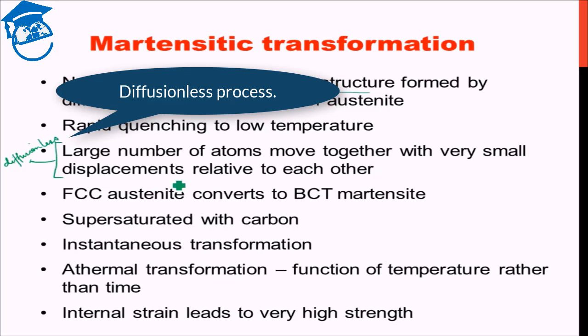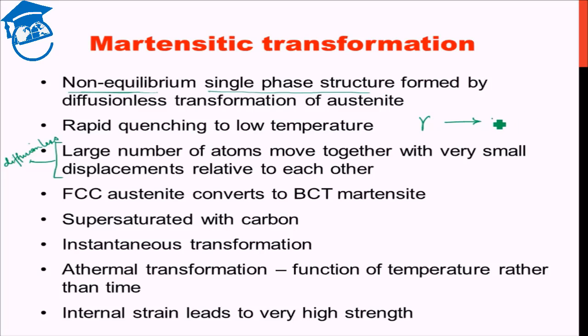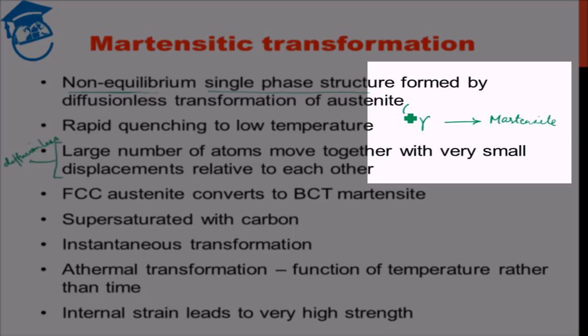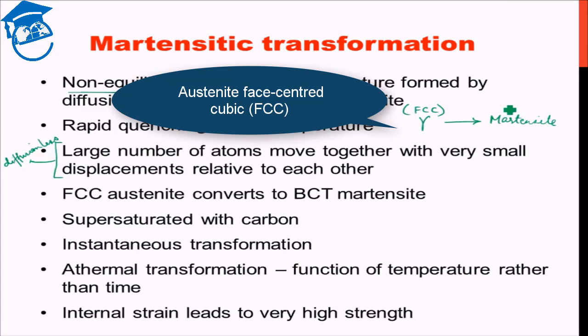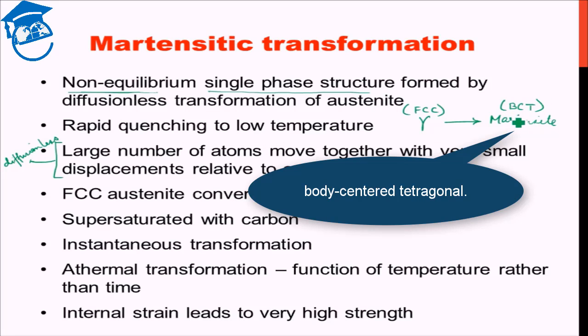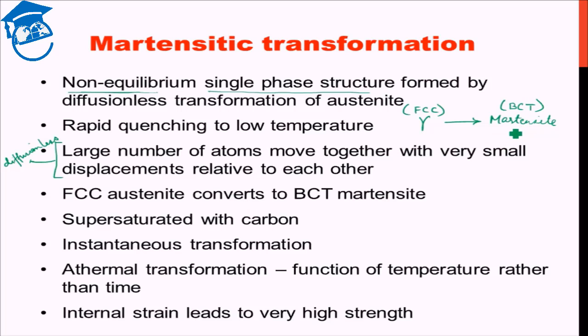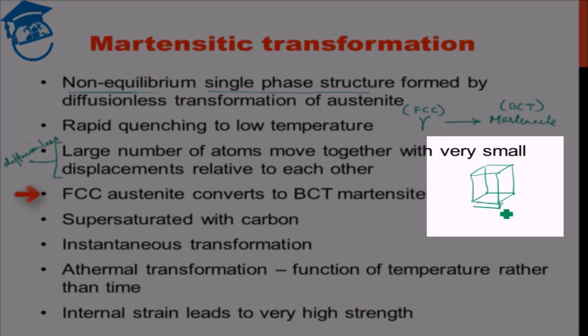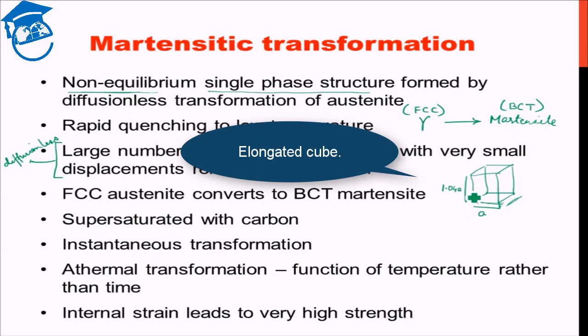What is happening during martensitic formation? Austenite is getting converted to martensite. Austenite is face-centered cubic structure, whereas martensite is body centered tetragonal BCT. BCT structure is something in which one of the axis is larger than other two axes. Basically, we have a slightly elongated cube. It's not a cube rather a cuboid, but the elongation is very less. These two axes are of equal length. This axis, if this is a, this is approximately 1.04a. It actually depends on how much amount of carbon is there in the system that will decide this length, but it's approximately till 4% larger in dimension.